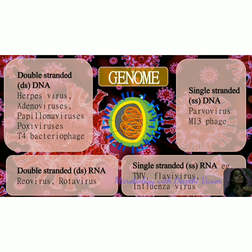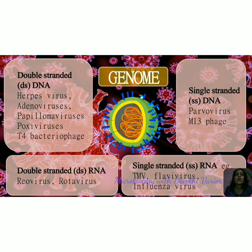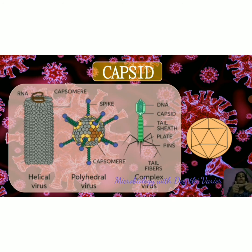These are different groups of viruses based on their genetic material — please note this is not the classification of viruses, because classification is not just based on genetic material; there are many other parameters involved. These are simply groups based on strandedness — double or single stranded — and based on whether the genetic material is DNA or RNA, giving us four different groups. The genetic material is the core of the virion and codes for important enzymes and structural proteins.